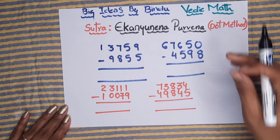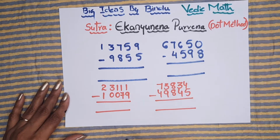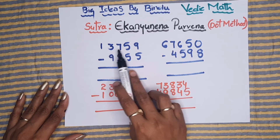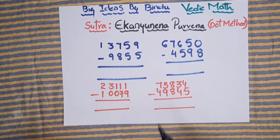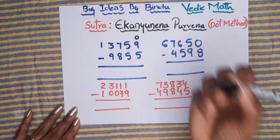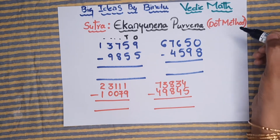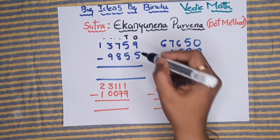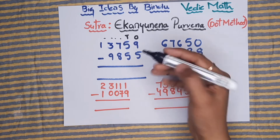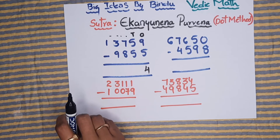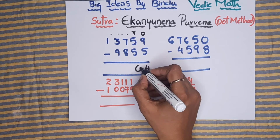In subtraction, we always subtract from the bigger number. Here the first number is 13759, which is bigger than 9855. Starting from the ones place: 9 minus 5 — 9 is bigger, so direct subtraction gives 4. Moving to the tens place: 5 minus 5 is also direct, giving 0.